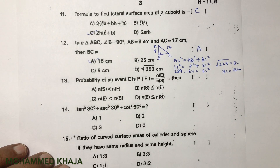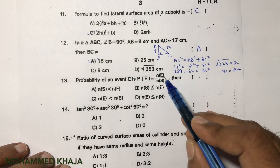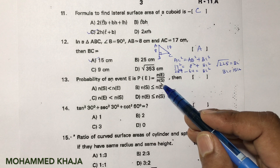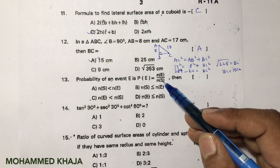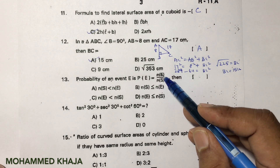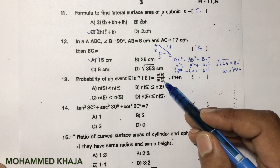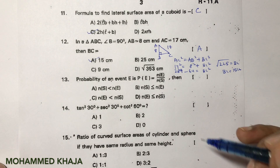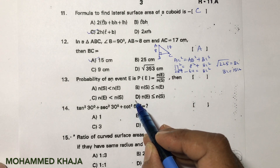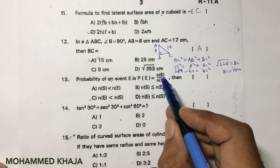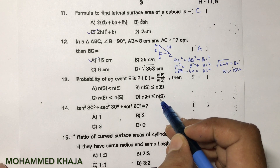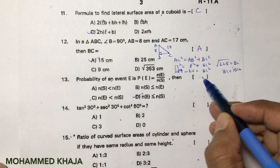The probability of an event E is P(E) = number of favorable outcomes divided by total outcomes (sample space). The number of favorable outcomes will be equal to or less than the total outcomes. The correct option is D.